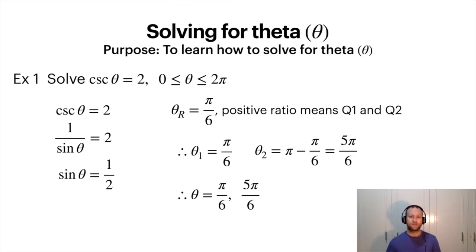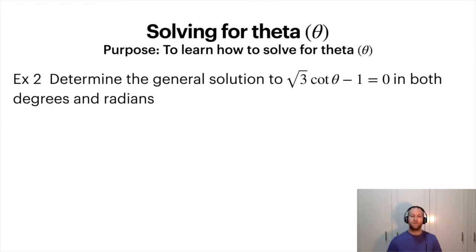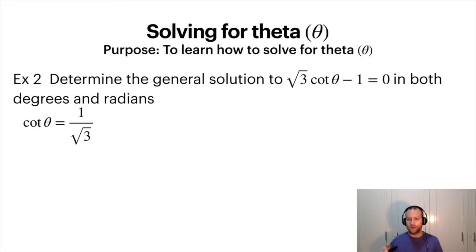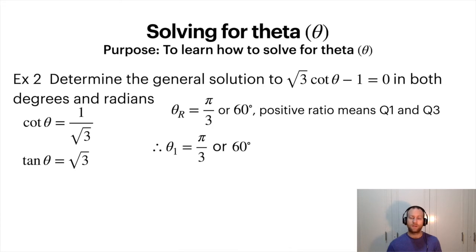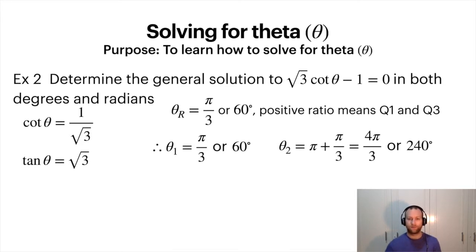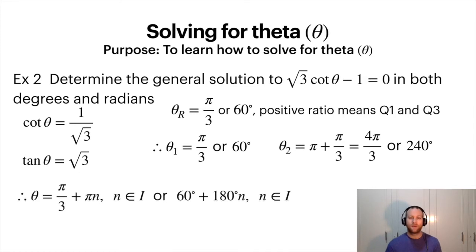Now let's try this one — we want the general solution. We're going to take this equation, rearrange it for the ratio: add one to the other side, divide by root 3. We get tan theta equals root 3. The reference angle is pi over 3, or 60 degrees, and because it's positive we're in quadrant one and three. In quadrant one the angle is just the reference angle; quadrant three is pi plus the reference angle.